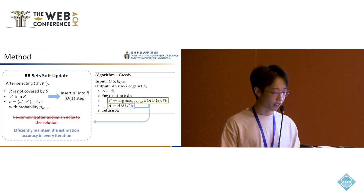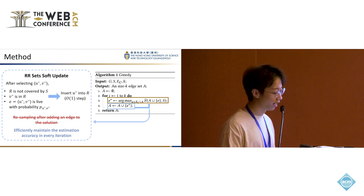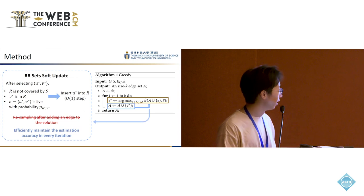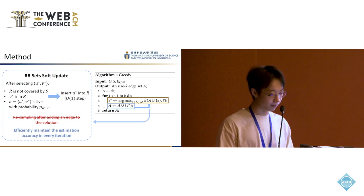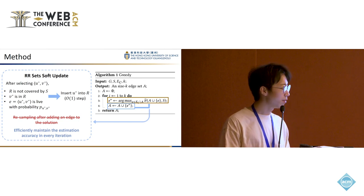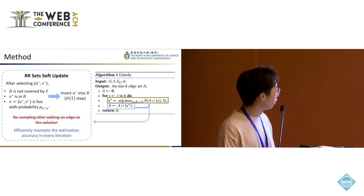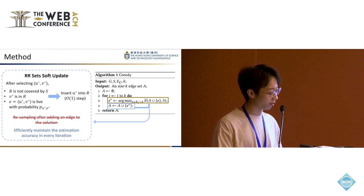Another problem here is how to maintain the accuracy after adding an edge into the solution set. After we select an edge pointing from u star to v star, we need to insert the edge into the network so that the estimation is still accurate in the next iteration. This is actually similar to the scenario of dynamic influence maximization. A previous approach is to update the sampled RR sets, which means that we traverse all the RR sets that contain v star and start a reverse traversal from it.